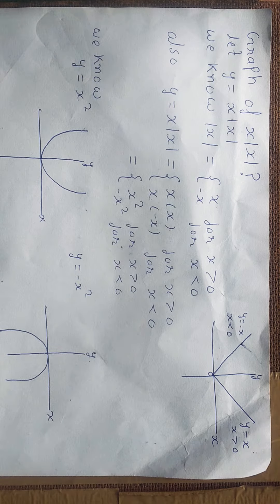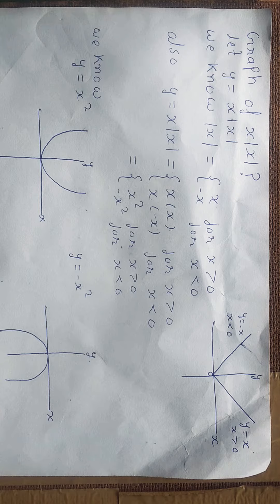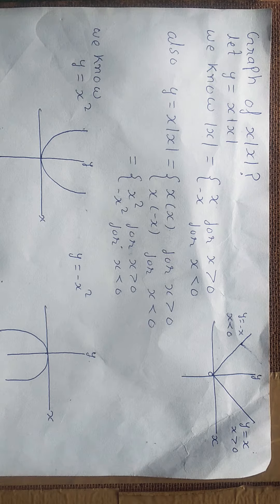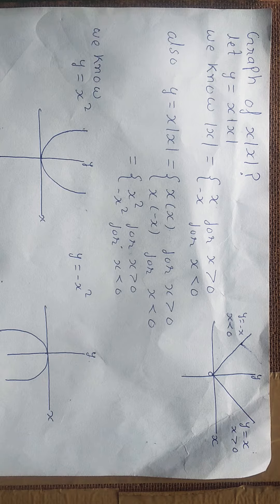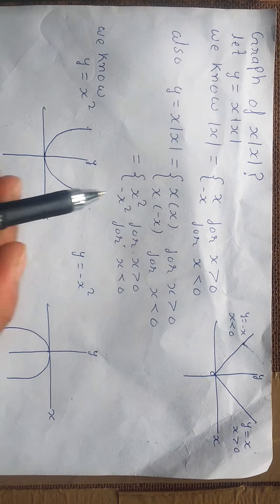Hello everyone, today we will discuss the graphical representation of x|x|. First, let's take y equal to x|x| because we need something to represent the function. Now we know |x| can be represented as positive as well as negative value.